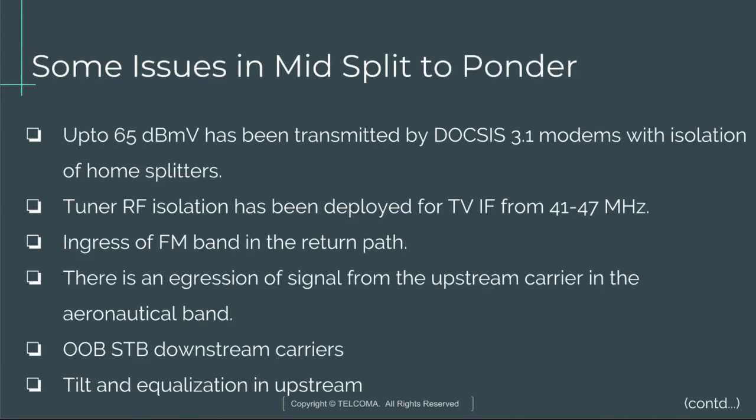Some issues in mid-split to consider: up to 65 dBmV has been transmitted by DOCSIS 3.1 modems with isolation of home splitters. Tuner RF isolation has been deployed for set-top box IF from 41 to 47 MHz. There is ingress of the FM band in the return path, ingression of signals from the upstream carrier in the aeronautical band, OOB set-top box downstream carriers, and tilt and equalization in the upstream.